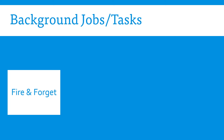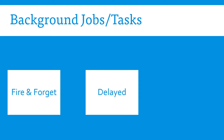Another type is the delayed tasks. Delayed tasks are like fire and forget, but you do not execute them as soon as the action is taken. Instead, you define a time when the background job is going to run. For example, it might be when you want to send a user a discount or a voucher three hours after they have signed up.